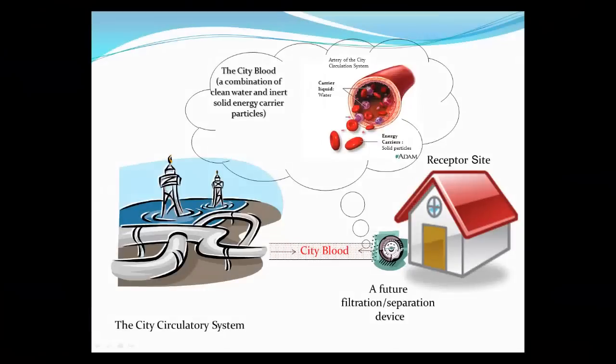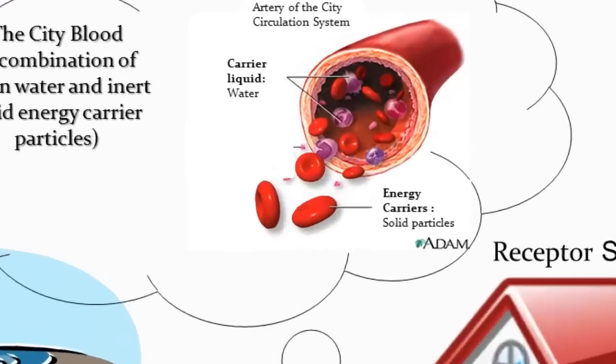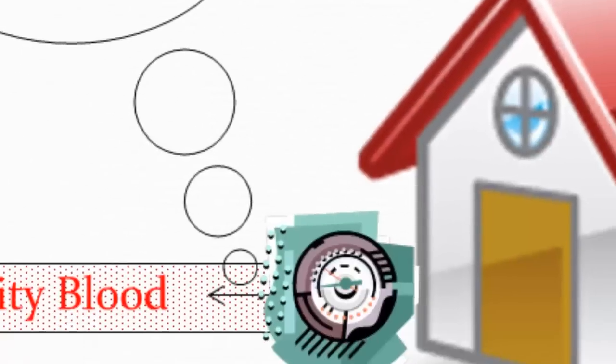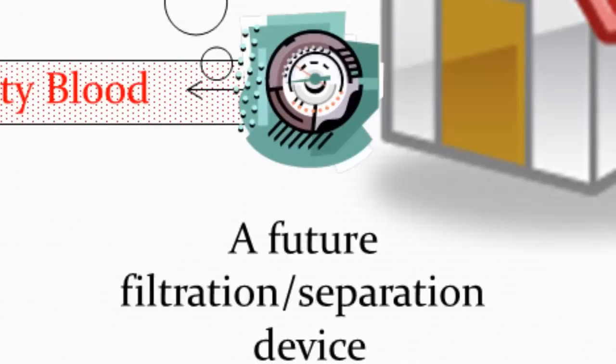The main challenge to realizing this vignette is the energy carrier—finding a way to distribute hydrogen and water, perhaps by using some sort of solid hydrogen carrier in solution. The energy carrier would be separated from the water at each receptor site, and the extracted hydrogen would then be deployed for energy production in fuel cells.